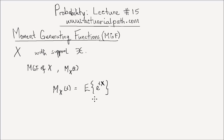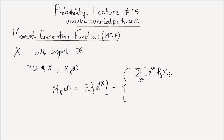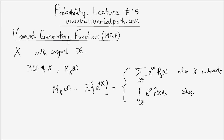This definition is true for discrete as well as continuous random variables. If x is discrete, the MGF is simply the sum over all values of the support of x of e to the tx times p of x. When x is continuous, the only difference is instead of a summation, we have an integral over all the support of x of e to the tx times the pdf f of x dx.